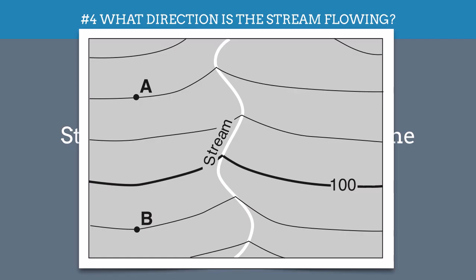Here's what I mean. Look at this map. I have a stream flowing in the middle here, but I only have one contour line labeled, so I don't know where the higher and lower elevations are.